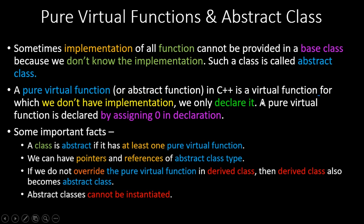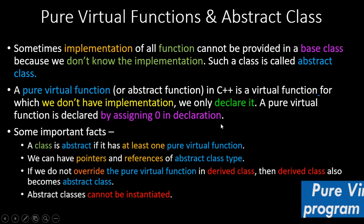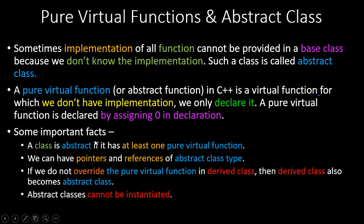A pure virtual function in C++ is a virtual function for which we don't have any implementation — we only declare it. It is declared by assigning 0 in the declaration. A class is abstract if it has at least one pure virtual function. You don't need any extra keyword; a class with one pure virtual function automatically becomes an abstract class.